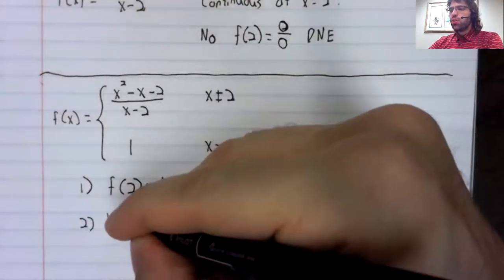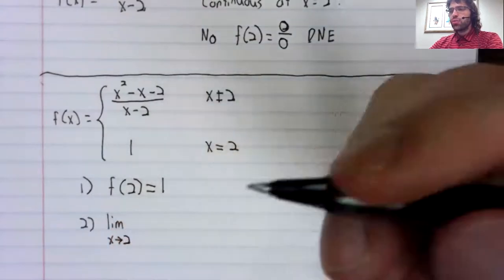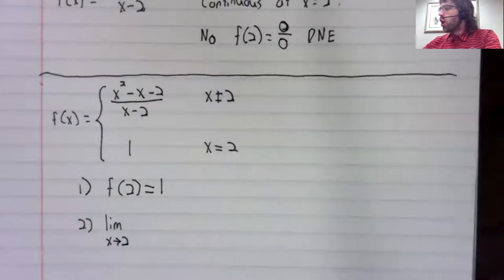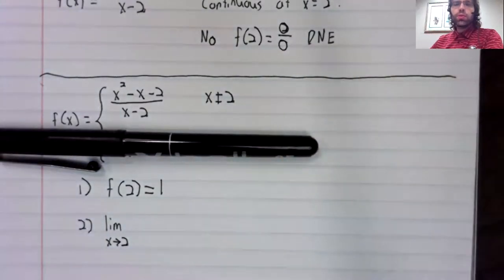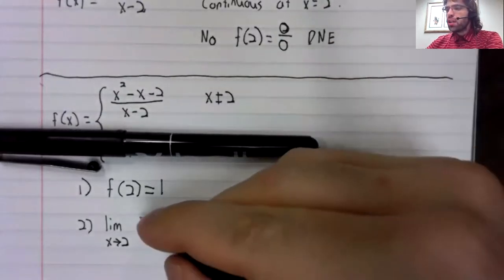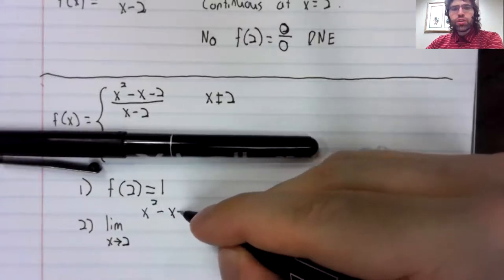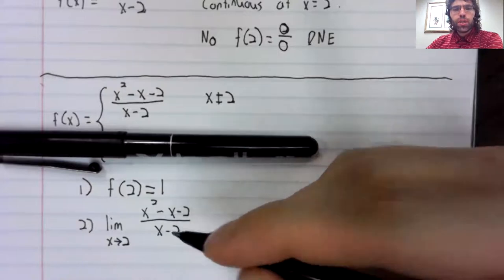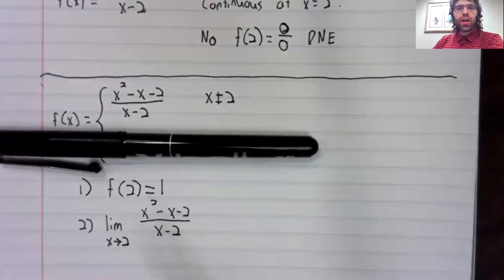What about the limit as x approaches two? Well, remember that if x is approaching two, x is not equal to two. So we're in this piece, and we're taking the limit of a rational function. If we plug two into this, we get zero divided by zero.